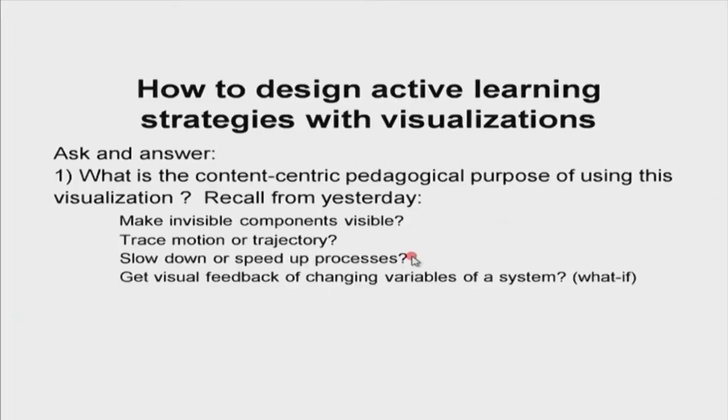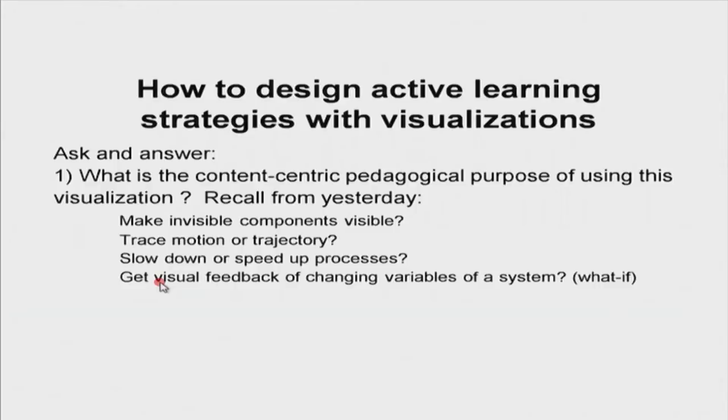Some participants mentioned yesterday that animation can help slow down processes which are normally very fast — split-second processes you cannot see with the naked eye. You can slow them down in animation, or speed them up. For example, how do earthquakes happen? Tectonic plates shift over several thousand years and finally break down — you can actually speed up this process using animation.